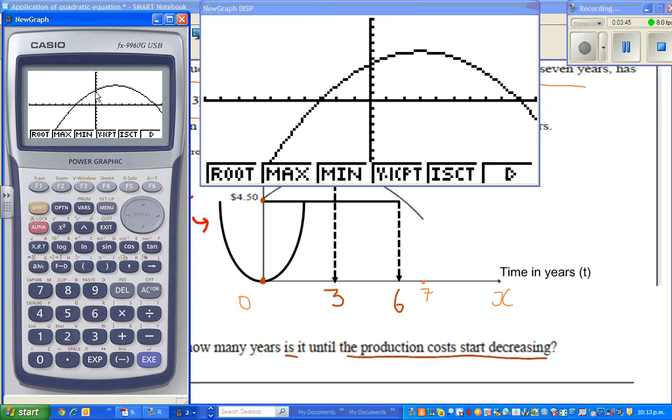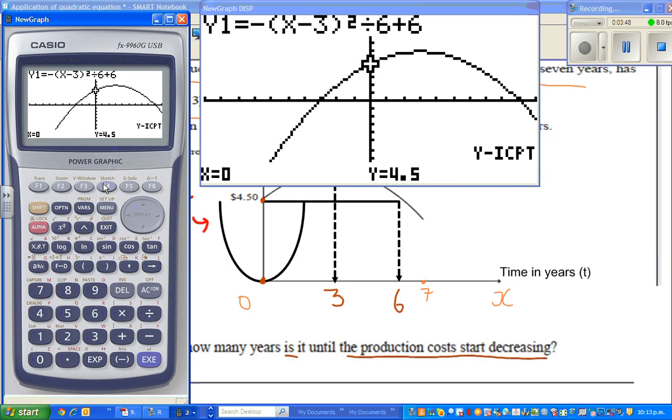Okay. So now we check the maximum. So this is your y-intercept. So your y-intercept is 0, 4.5. And we answered after 6 years, this is 3 years. So your vertex is at 3, 6.